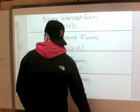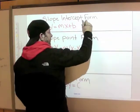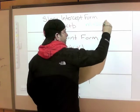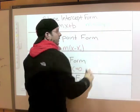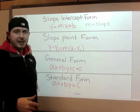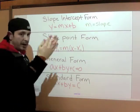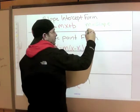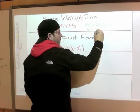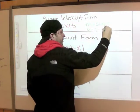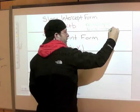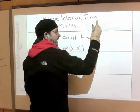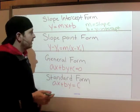M equals slope. To graph a line you need slope — how steep is that line. And then B equals our y-intercept, meaning where does this line cross our y-axis?